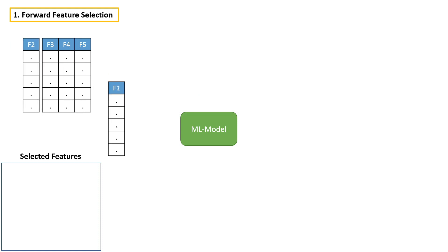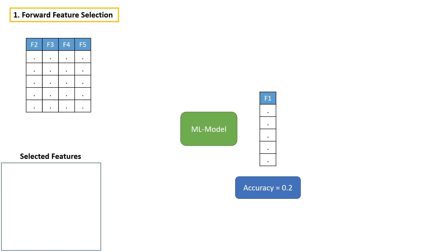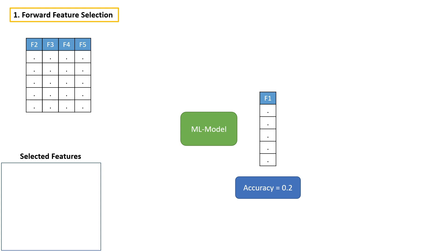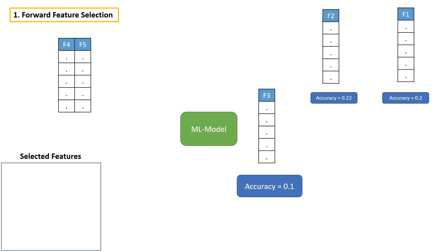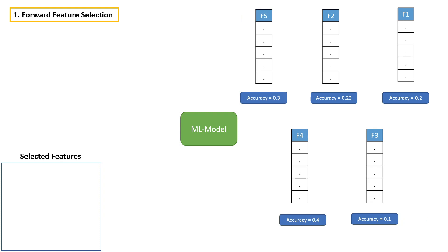The idea is: take the first feature, build a model, and calculate accuracy or whatever metric you are interested in. Then take the second feature, build a model, and calculate accuracy. Likewise, take each and every feature, build a model, and calculate accuracy. After building a model for each individual feature, we have to select the one which gives us the highest accuracy. In this case, feature four gives us the highest accuracy, so let's add feature four to the selected feature list.